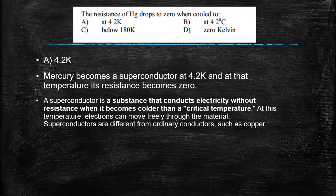And what is a superconductor? That is something important to keep in mind. A superconductor is a substance that can conduct electricity without any resistance when it becomes colder than a critical temperature. At this temperature, electrons can move very freely through the material.